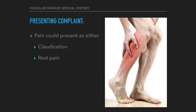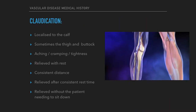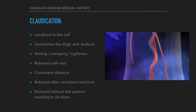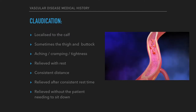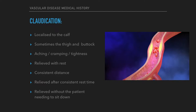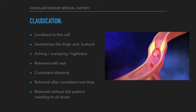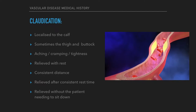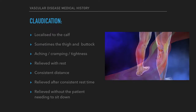History of presenting complaint: pain could present as either claudication or rest pain. Claudication is usually localized to the calf and can sometimes extend to the thigh and sometimes the gluteal muscles. Patients describe the pain as aching, cramping, or tightness.